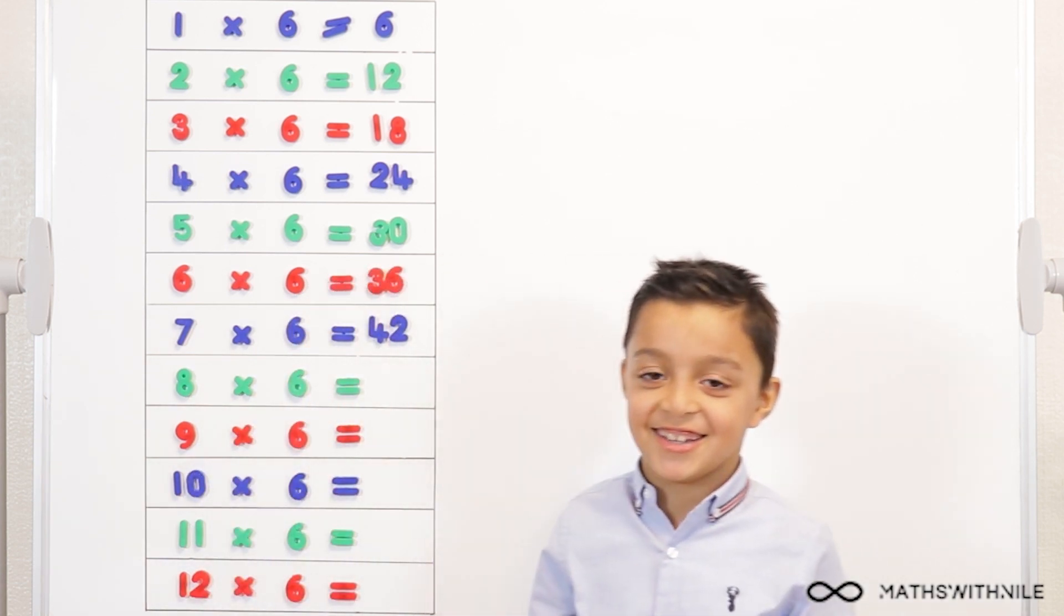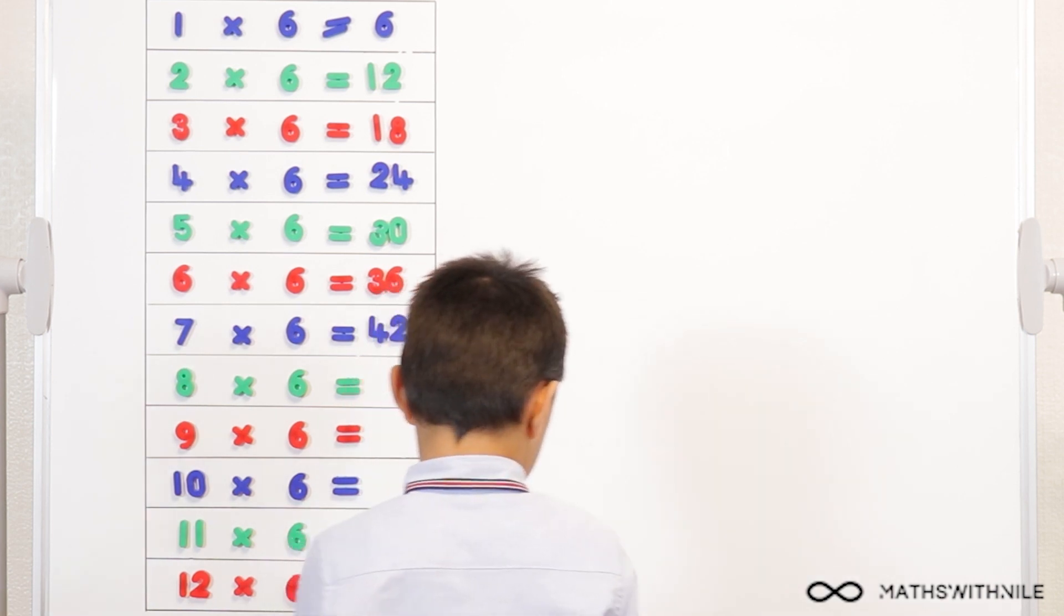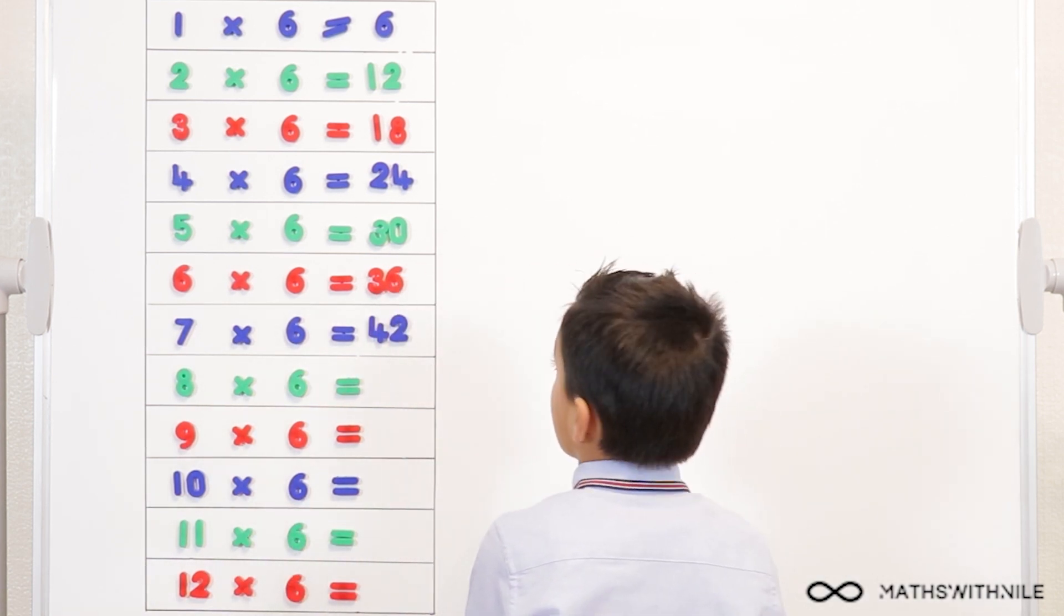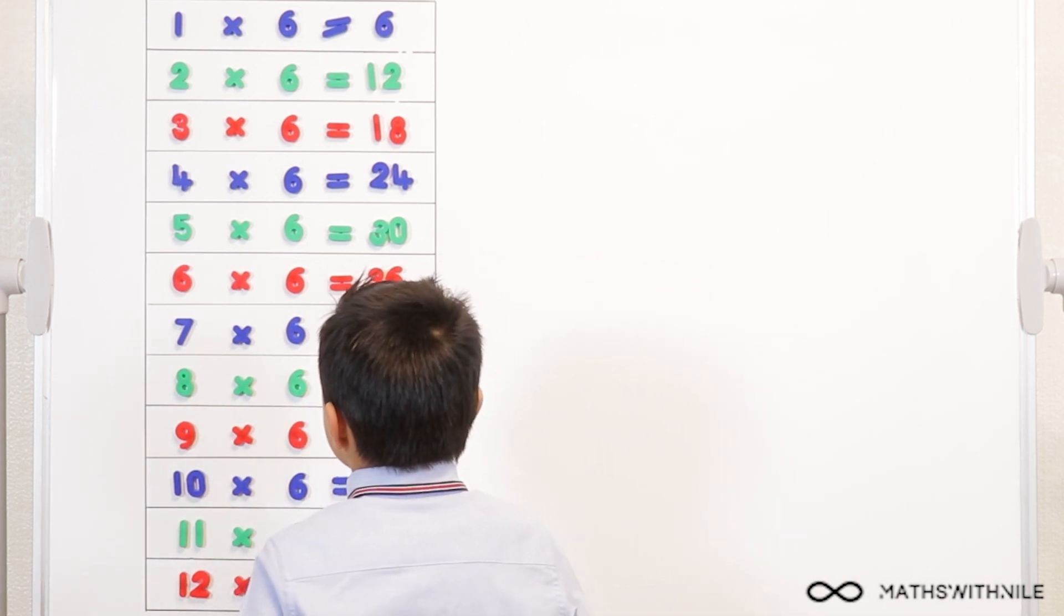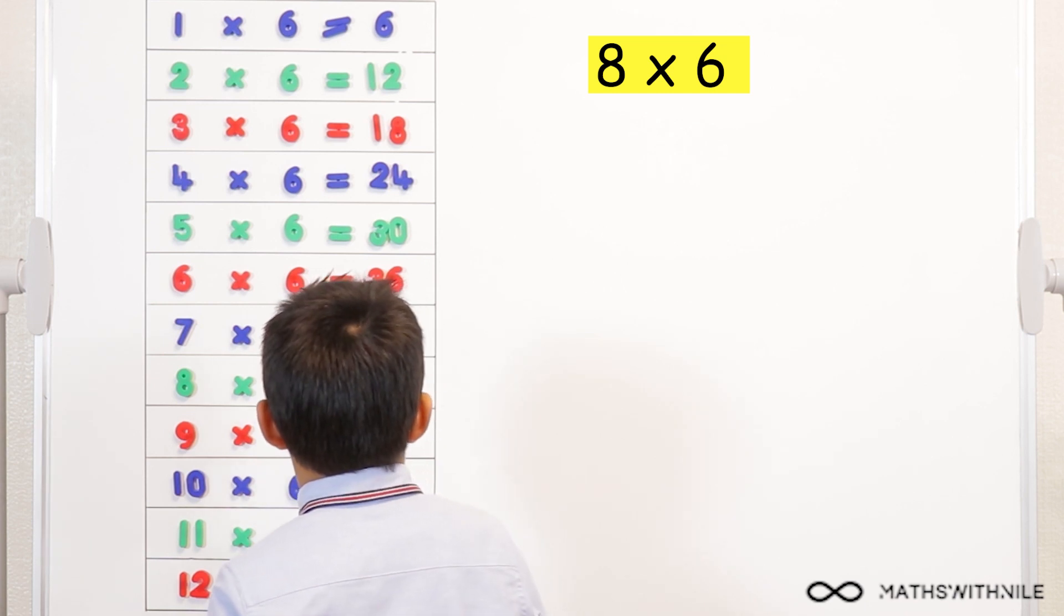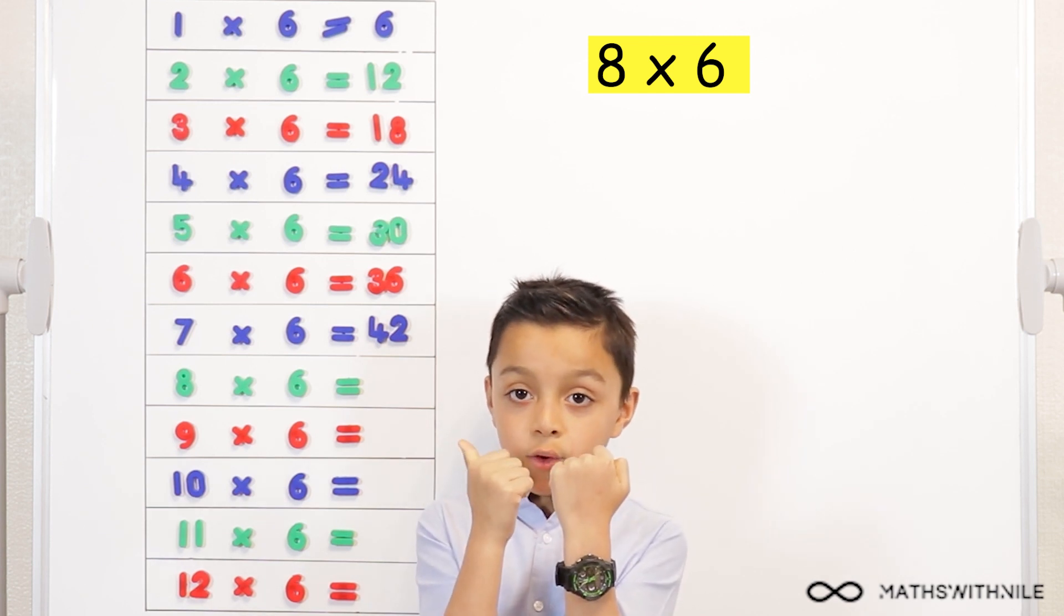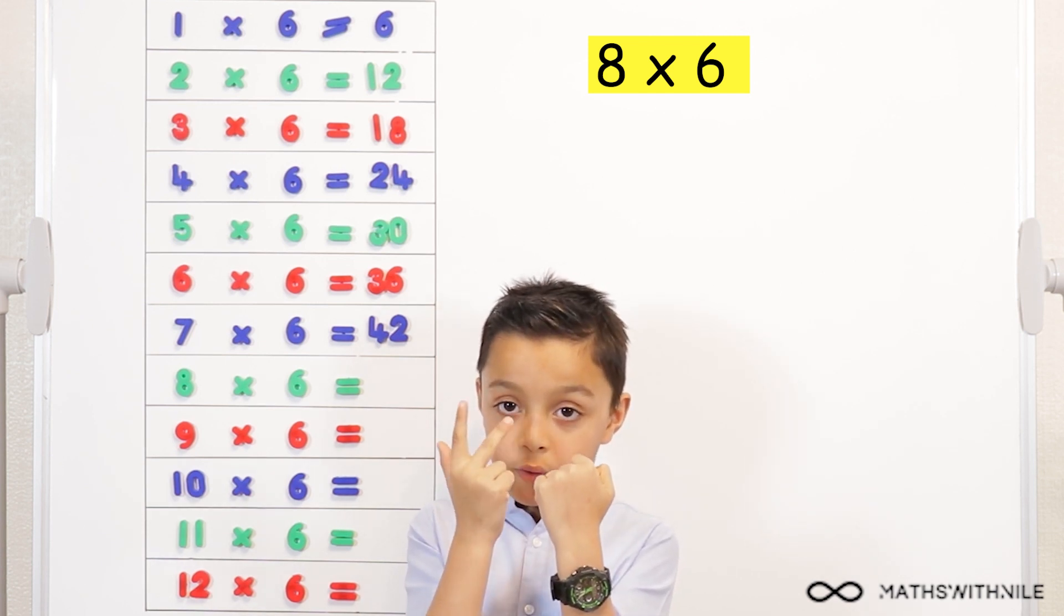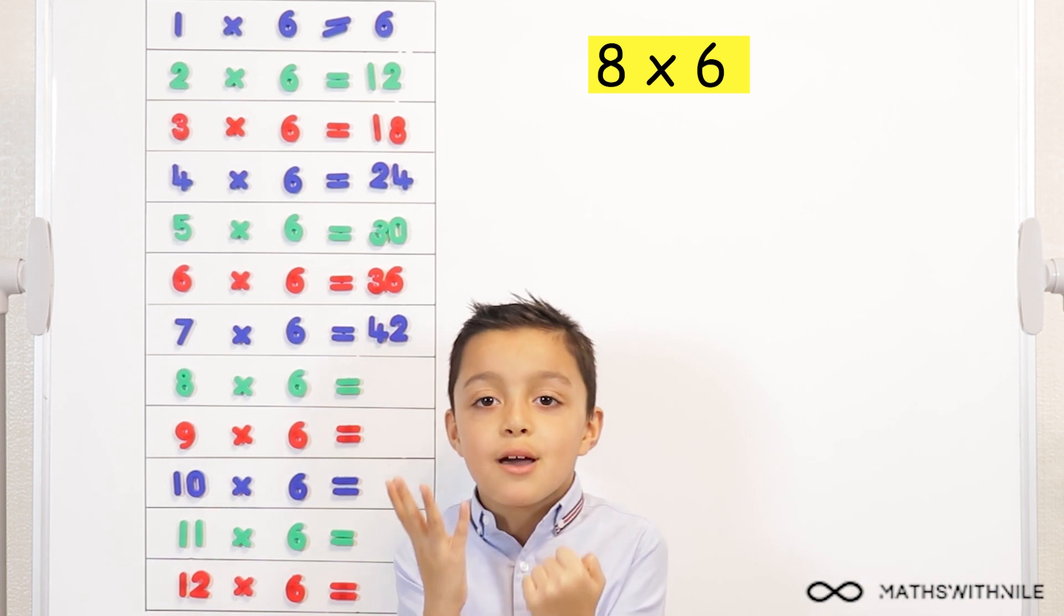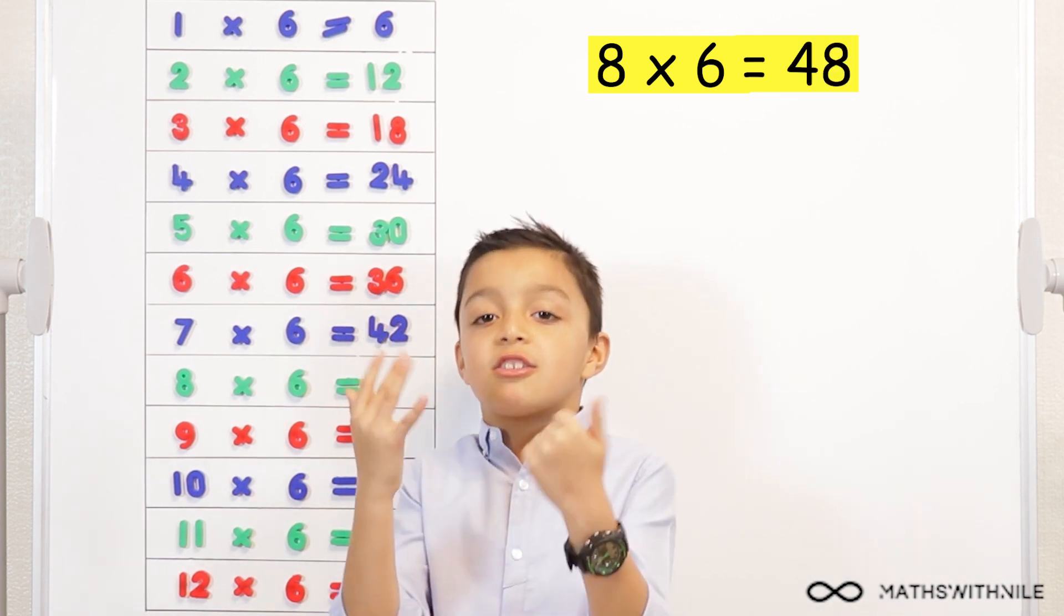I'm kind of tired, kind of. Okay, what's the next question? Um, eight times six, forty-two. Adding on six. So, forty-two, forty-three, forty-four, forty-five, forty-six, forty-seven, forty-eight. Good job.